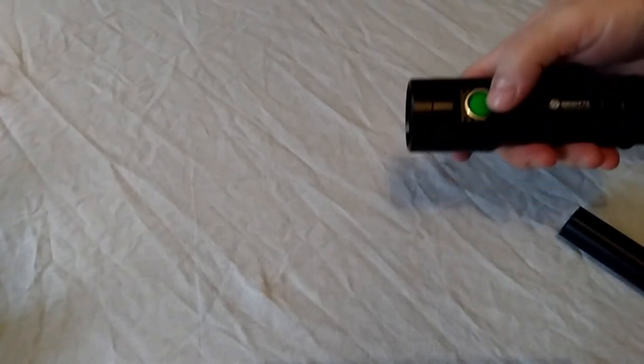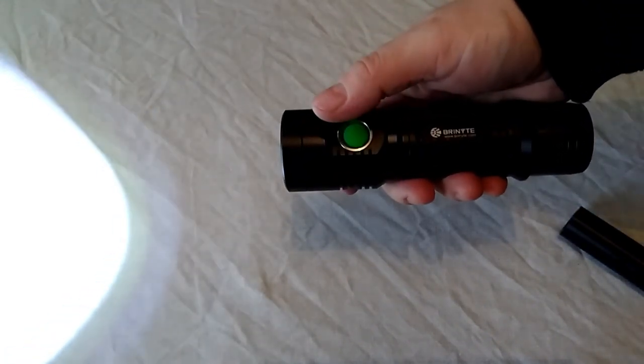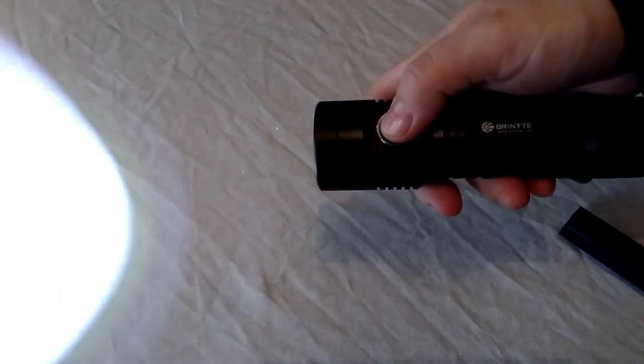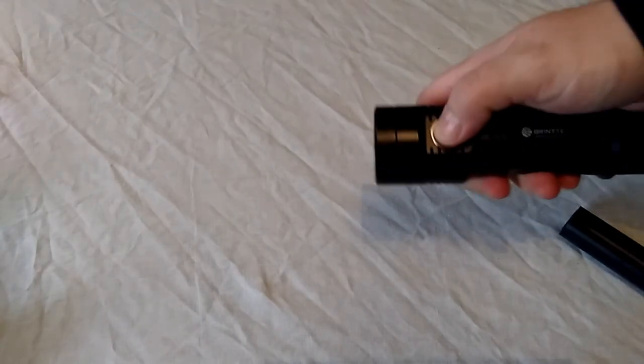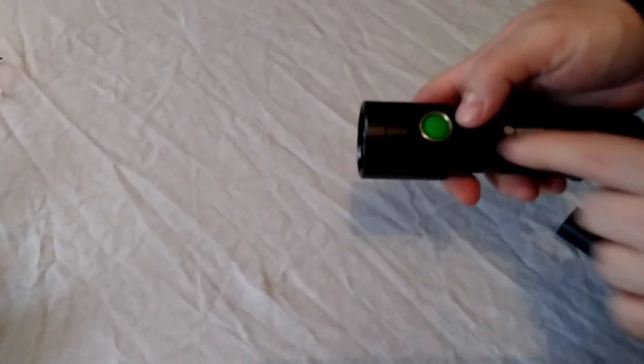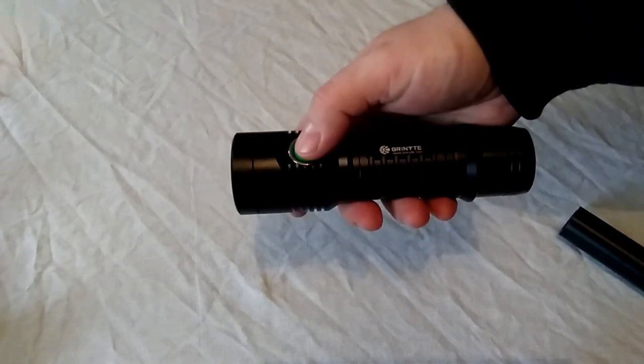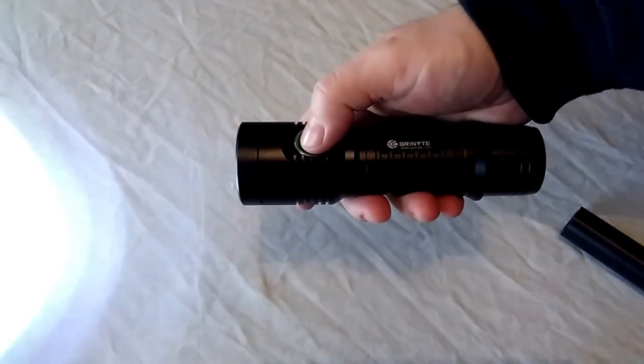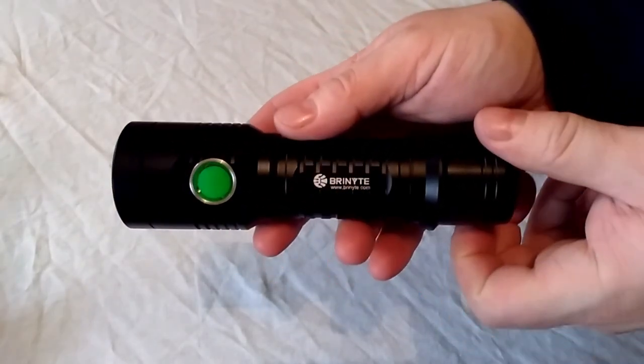To turn it on you just press that front button and it starts at the highest power, then you just cycle down: turbo, high, medium, low, and then off. Hold it down for strobe and then the next click goes to SOS. That is a very good feature. A lot of people always mention that instant strobe. If you want a torch with an instant strobe, there you go.